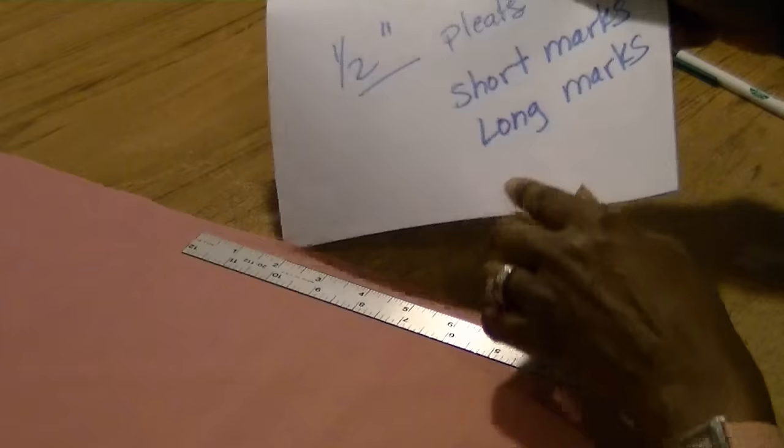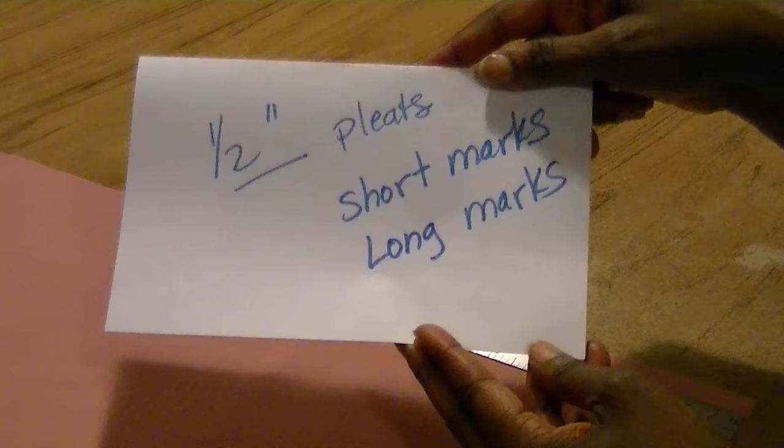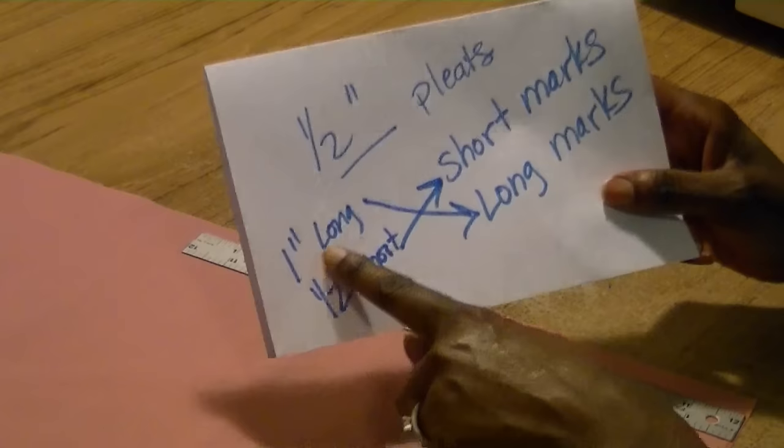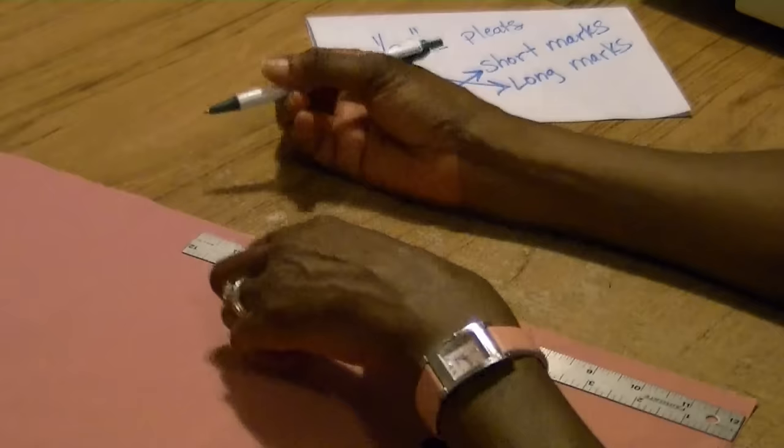I'm using a 12-inch ruler. Since my pleats are going to be a half inch, I want them to also be a half inch in depth. I'm going to be using short marks and long marks: the one-inch mark will be my long mark, and the half-inch mark will be my short mark.